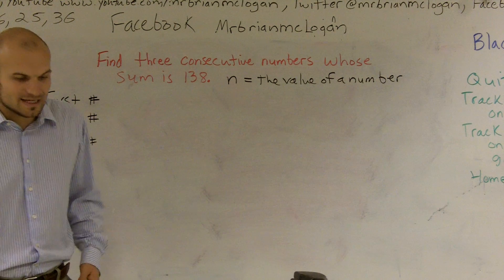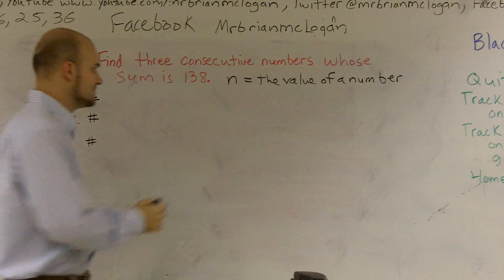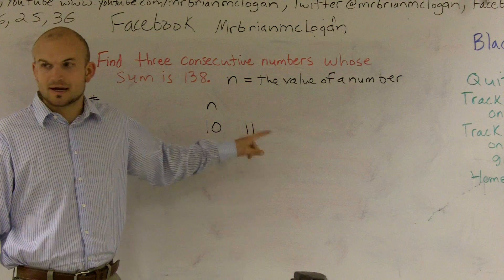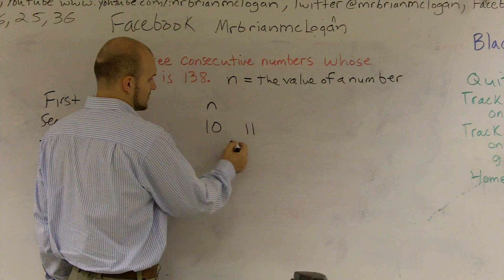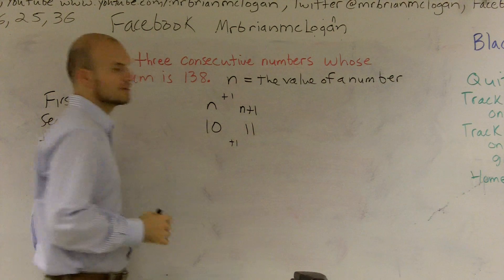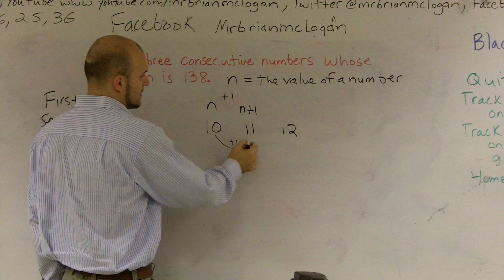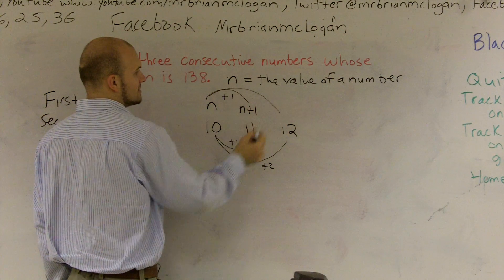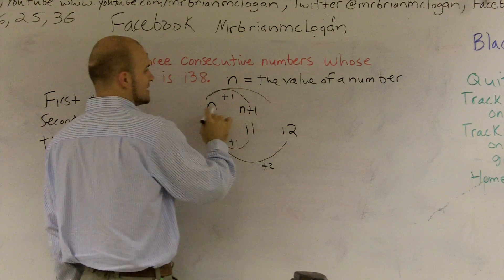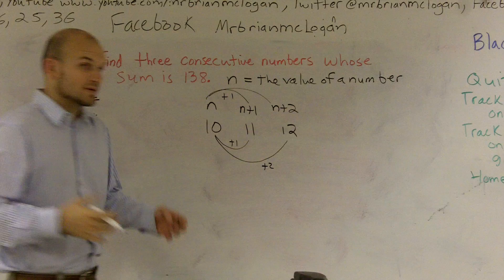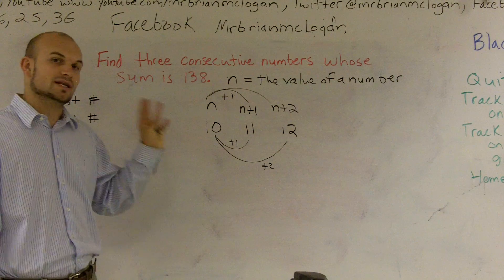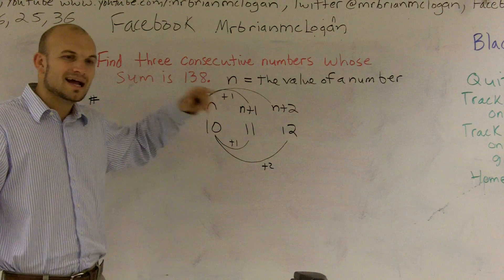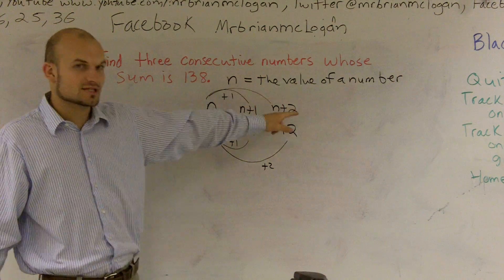Let's let n equal the value of a number. For instance, let's say n equals 10. If I want three consecutive numbers starting with 10, the next number would be 11 — to get from 10 to 11, I add 1, so that's n plus 1. The next number would be 12 — to get from 10 to 12, I add 2, so that's n plus 2. Without knowing what any of these numbers are, I can write expressions for three consecutive numbers: n, n plus 1, and n plus 2.